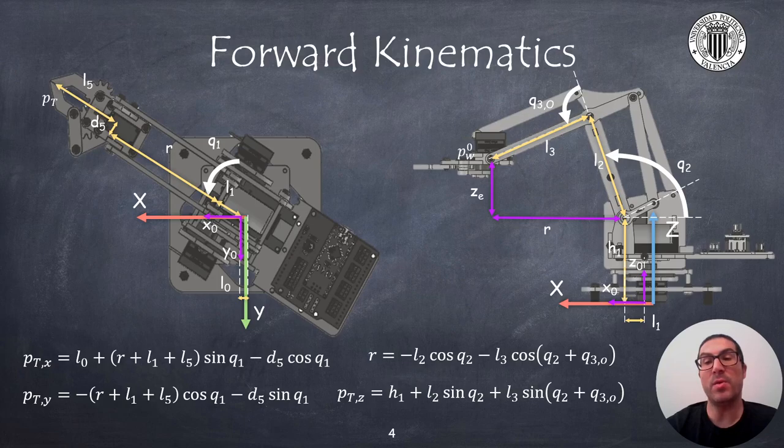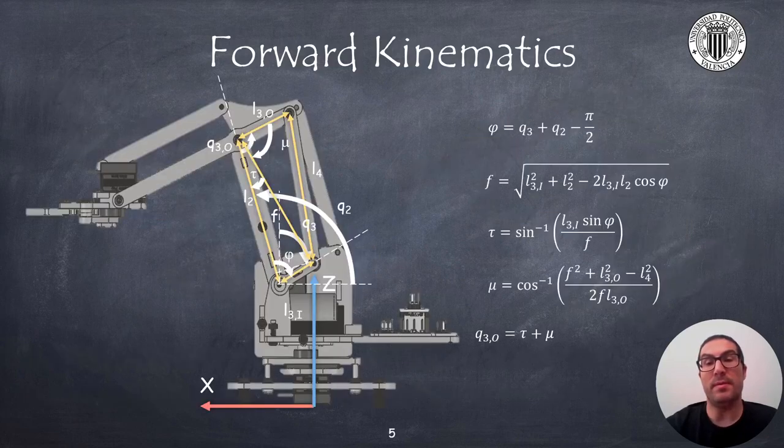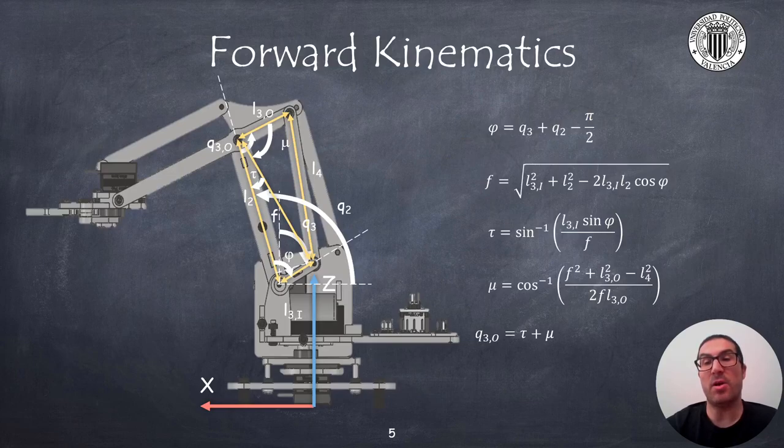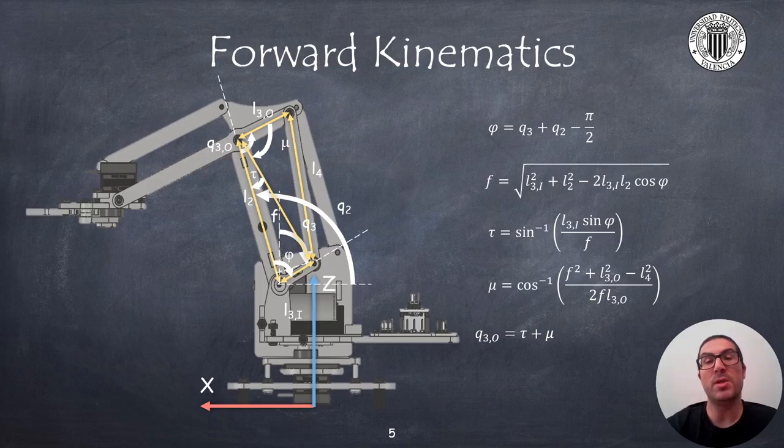The angle q3o is the angle computed from the four linkage mechanism as we will see now. Here, I highlight the main elements of these four linkage mechanisms to compute the angle q3o. So, we must first compute the angle phi from the linear relation with the angles q2 and q3, as shown in the formula.